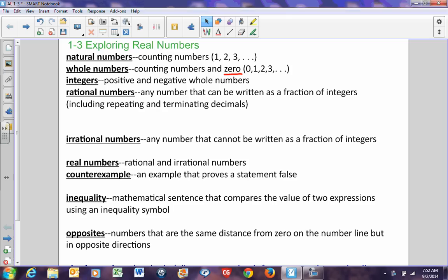Integers are positive and negative whole numbers. So negative 2, negative 1, 0, 1, 2, 3, etc.